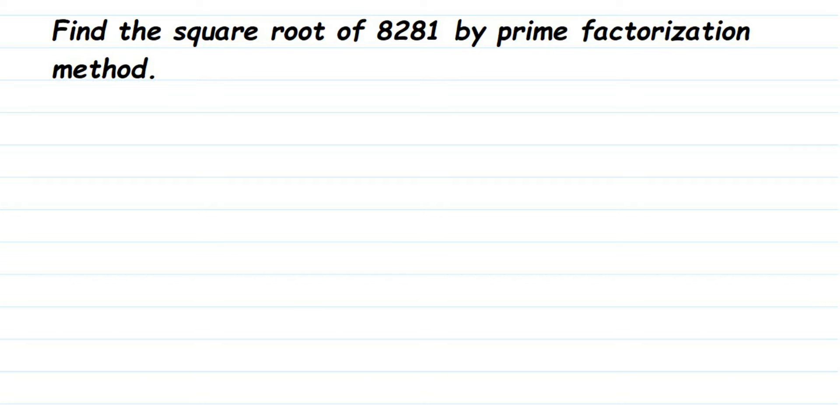Hello everyone, here is a question from square and square root. The question is: find the square root of 8281 by prime factorization method. So we have to find out square root using prime factorization. Prime factorization means we have to express this given number in terms of prime factors.